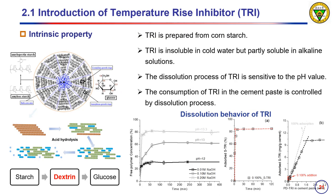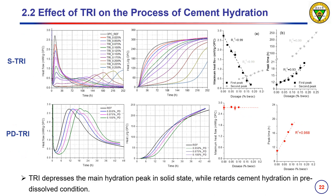TRI is prepared from corn starch by controlling the reaction condition and time. The properties, including the molecular weight distribution and solubility of TRI, can be quantitatively controlled. TRI is insoluble in cold water, but partly soluble in alkali solution. Along with increasing pH, the dissolution rate of TRI increased gradually. The consumption of TRI in cement paste is controlled by the limited dissolution process. TRI can lower the height of the main hydration peak at a very low dosage, introducing a slight extension of the induction period and a little peak time shift.